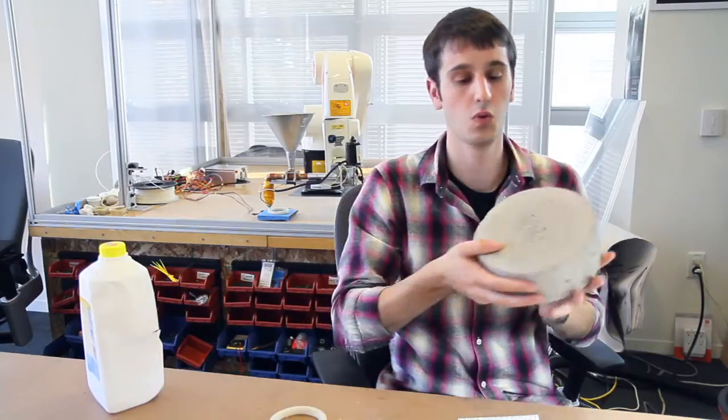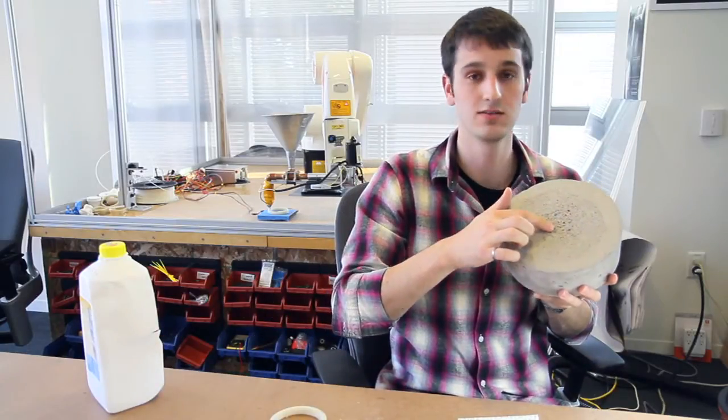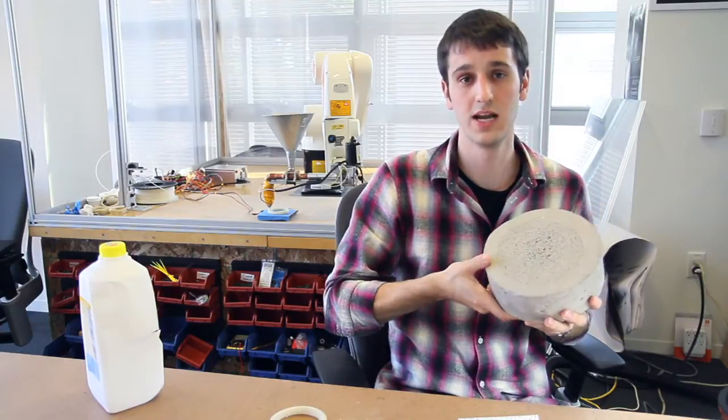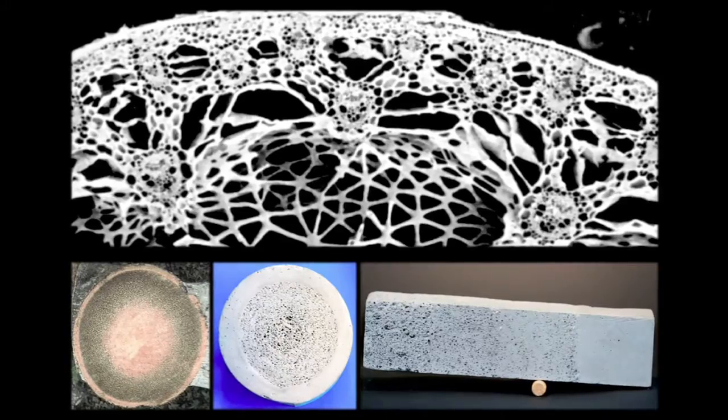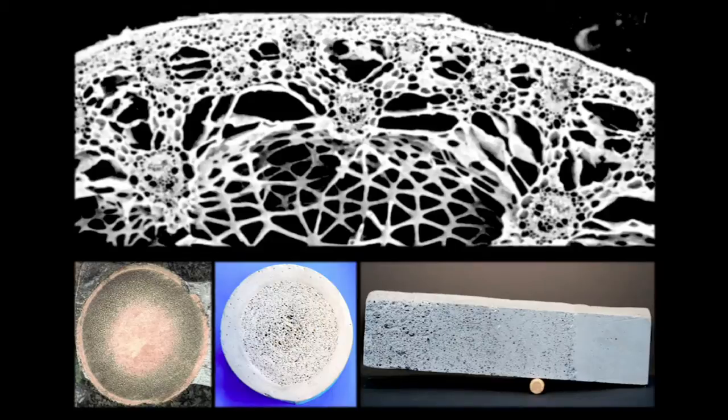Looking at concrete, we're investigating density gradients, which is analogous to natural structures such as bone and palm trees. By controlling the density spatially, we can actually use the material more efficiently to create structures which are lighter and stronger.